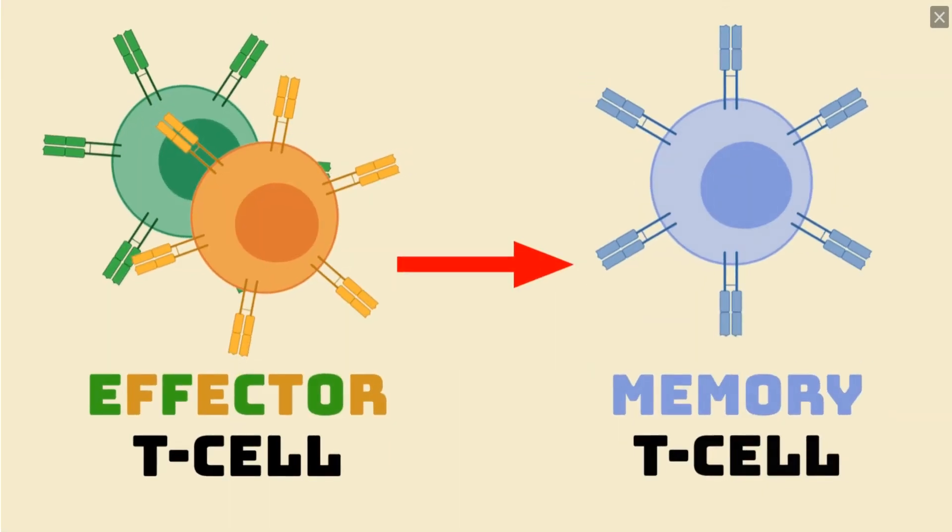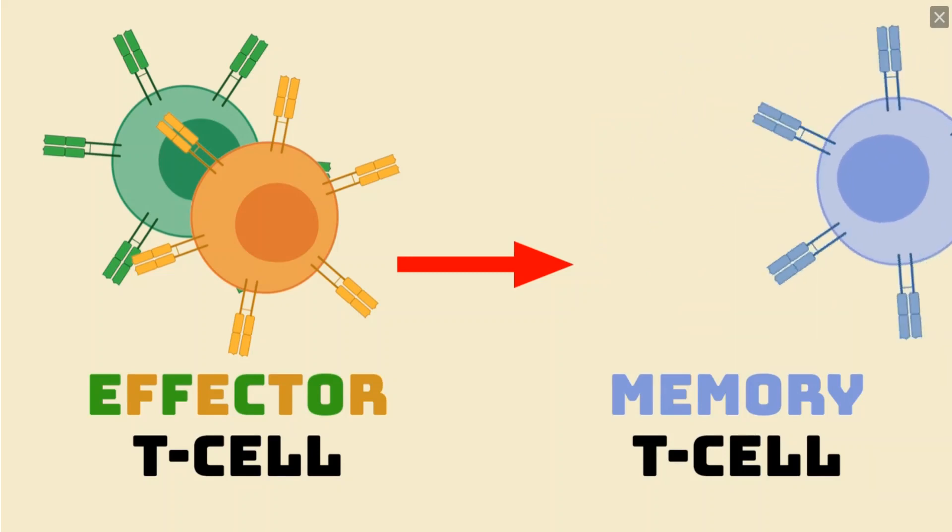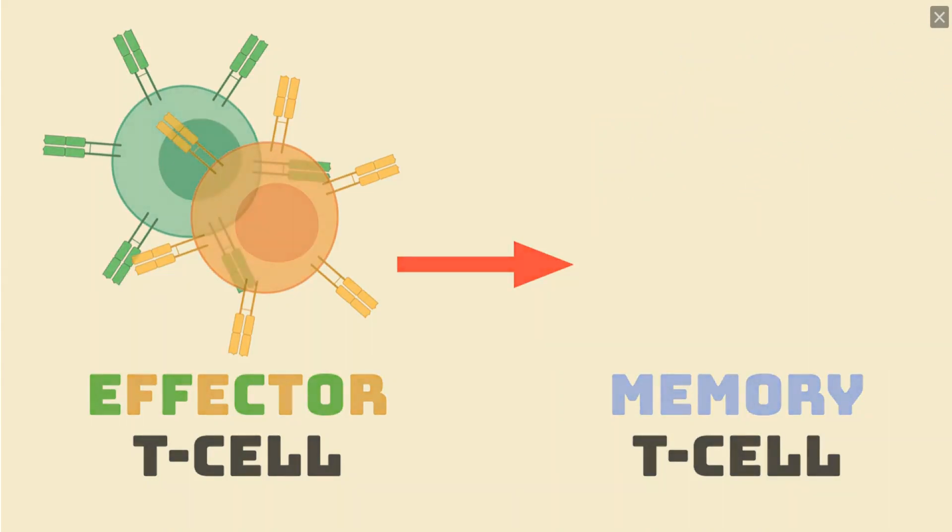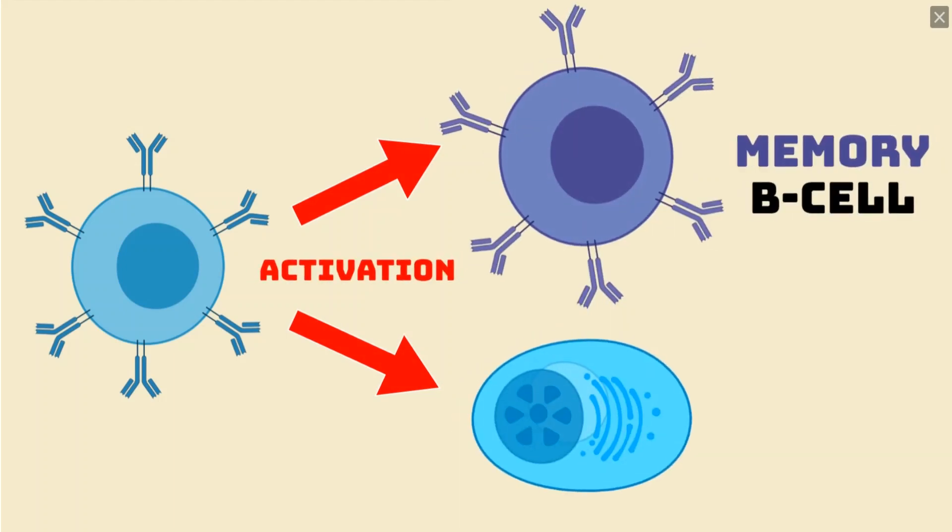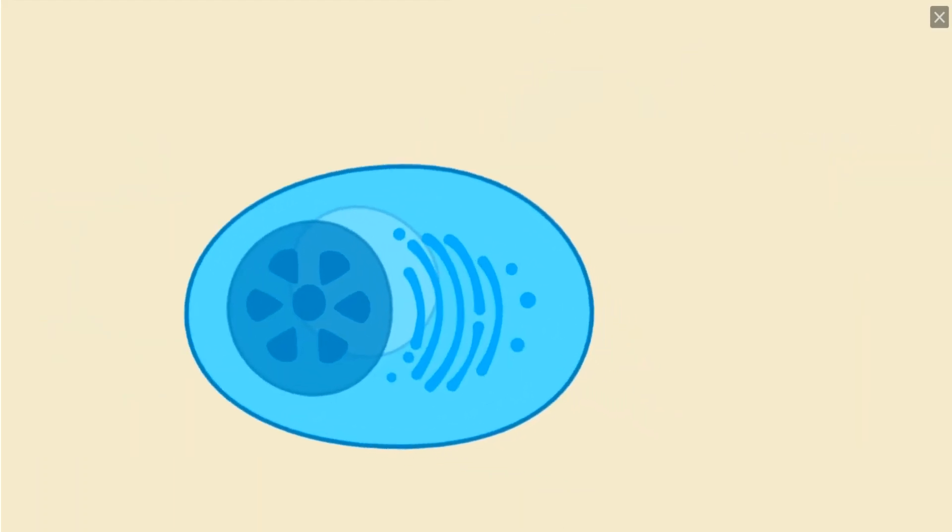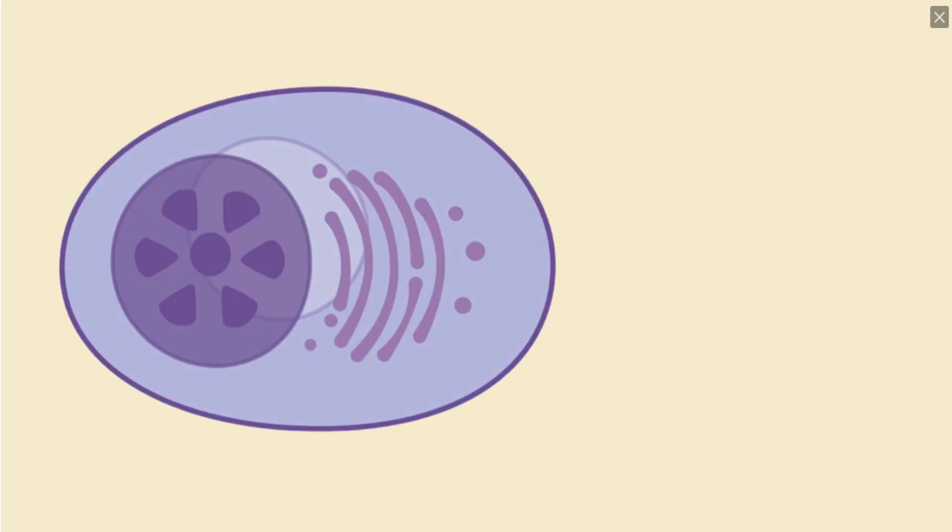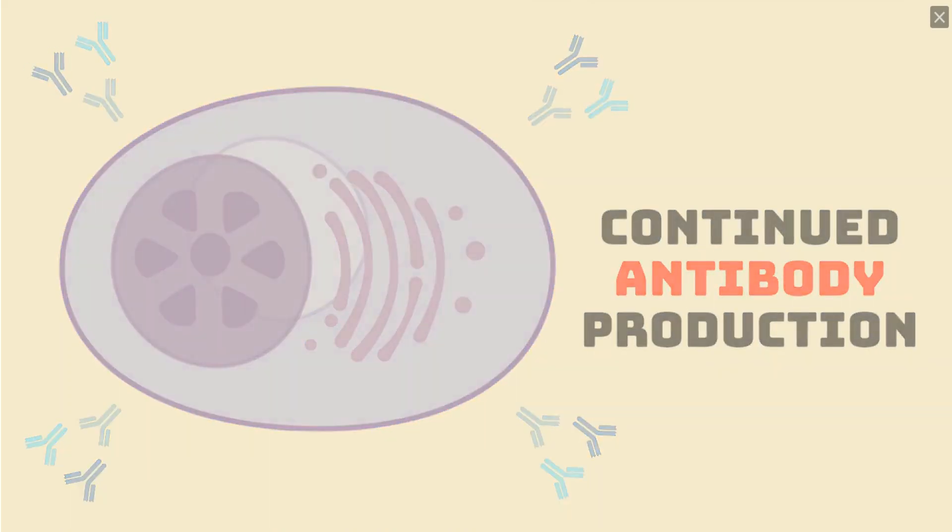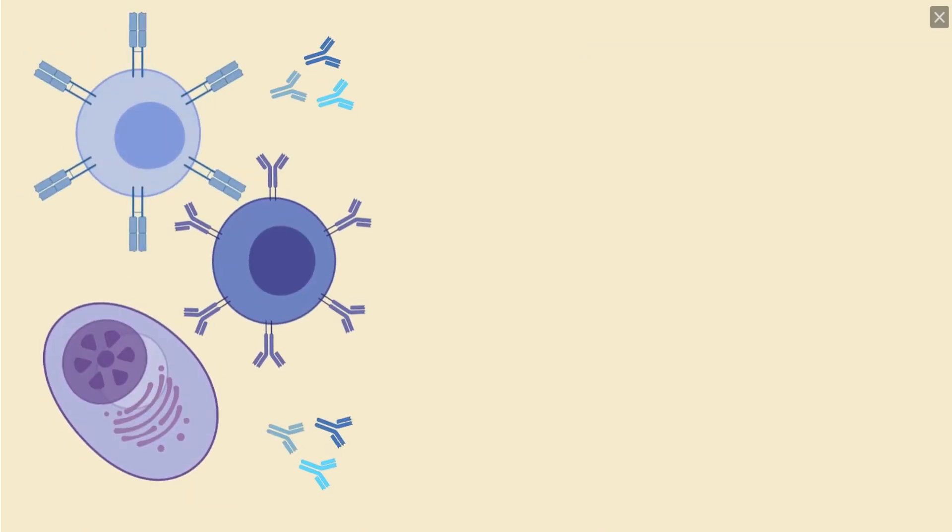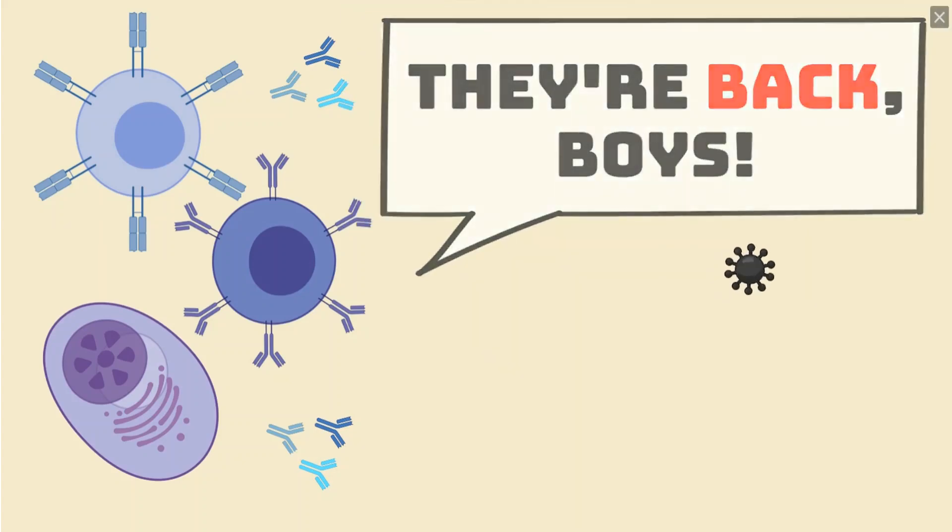On the T cell side, some leftover cells will become memory T cells, patrolling the body's tissues, to look for any sign of a return of the pathogen. With B cells, memory cells are made shortly after activation, but among the plasma cells that remain, there will always be a small number that live on and continue to produce antibodies. After Timmy's immune system worked to fight off the flu, his adaptive immune system now has the memory cells that will recognize this particular strain of the flu virus, in case he contracts it again.